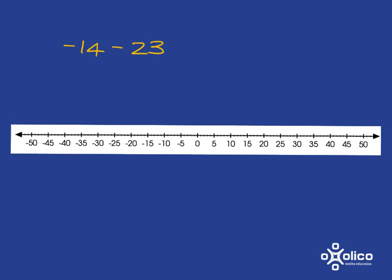negative 14 subtract 23, I know that that means I must start at negative 14, and I must go down 23 steps. But I know that that's just going to be the mirror image of starting at 14 and going up 23 steps.